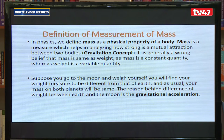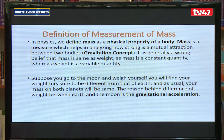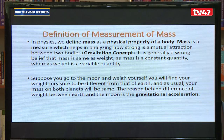From length, we move on to mass as a fundamental unit. Mass is defined as a physical property of a body that helps us analyze how strong the mutual attraction between two bodies is. It is generally wrong to believe that mass is the same as weight, as the term weight is often used interchangeably with mass. Mass is always constant everywhere, whereas weight is a variable quantity that depends on its platform or location.